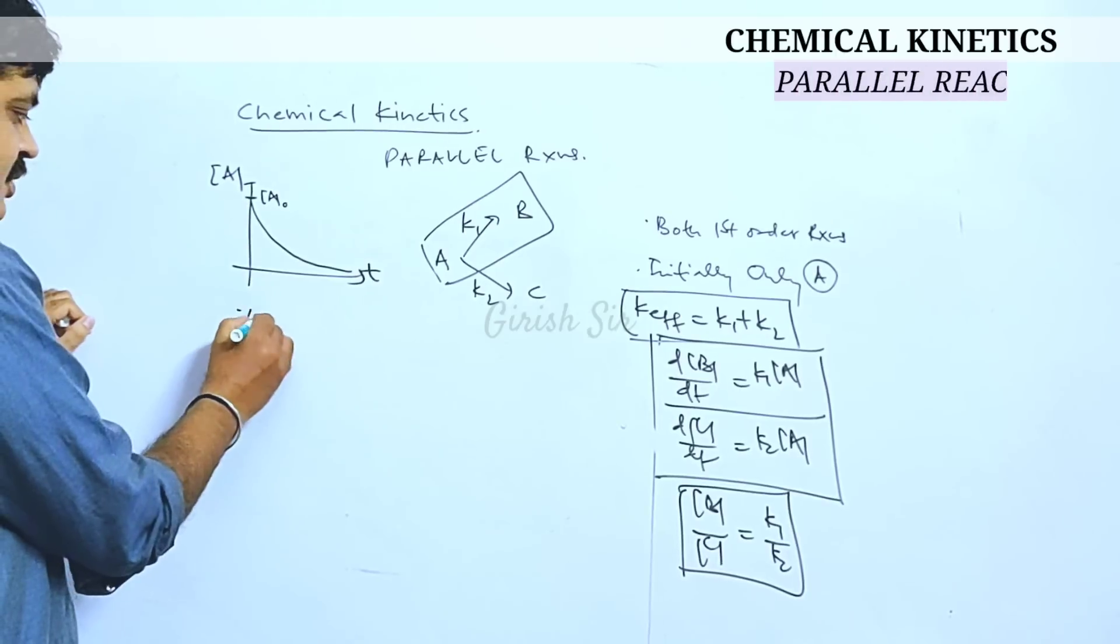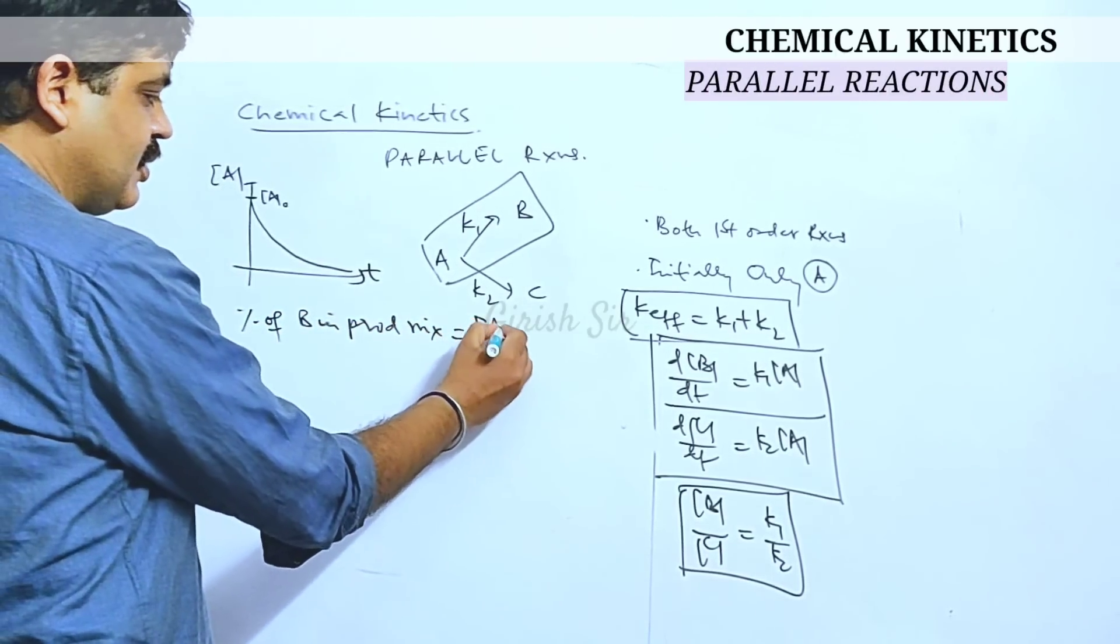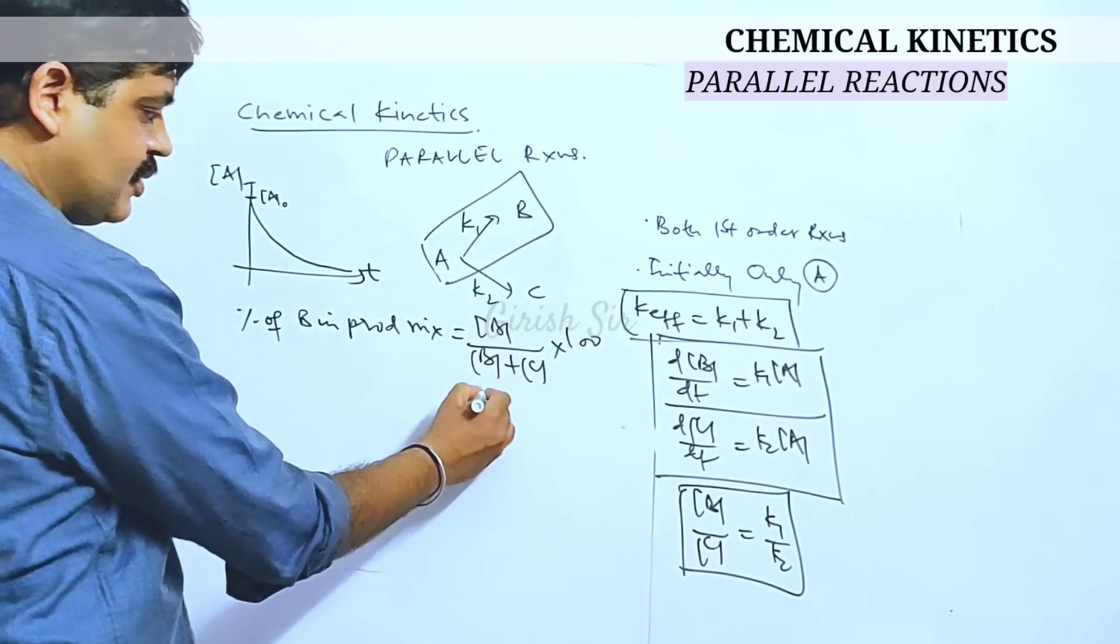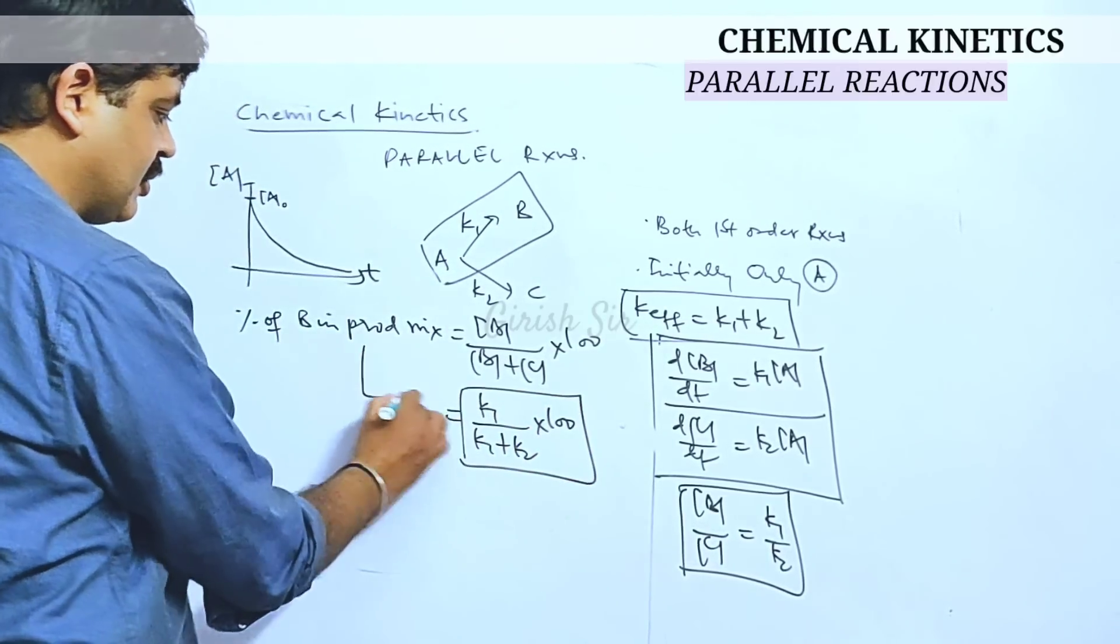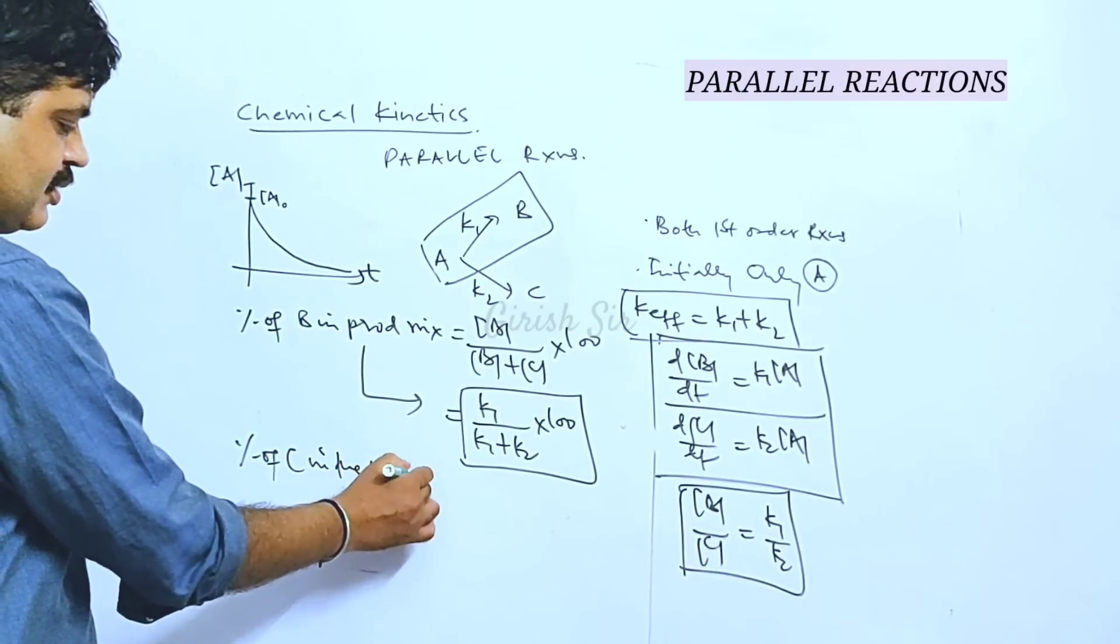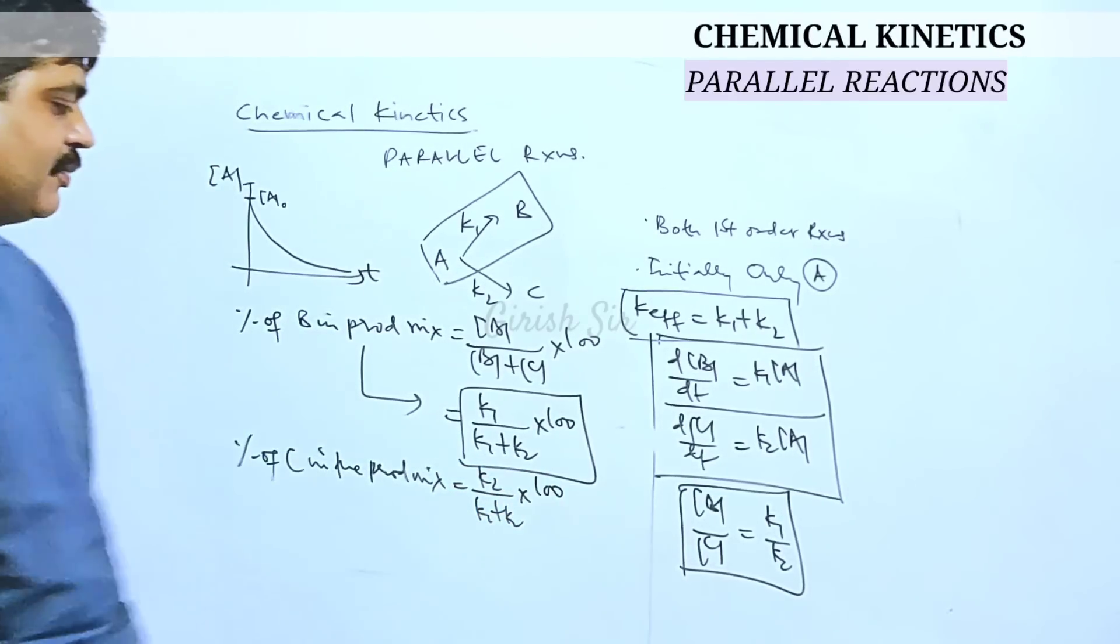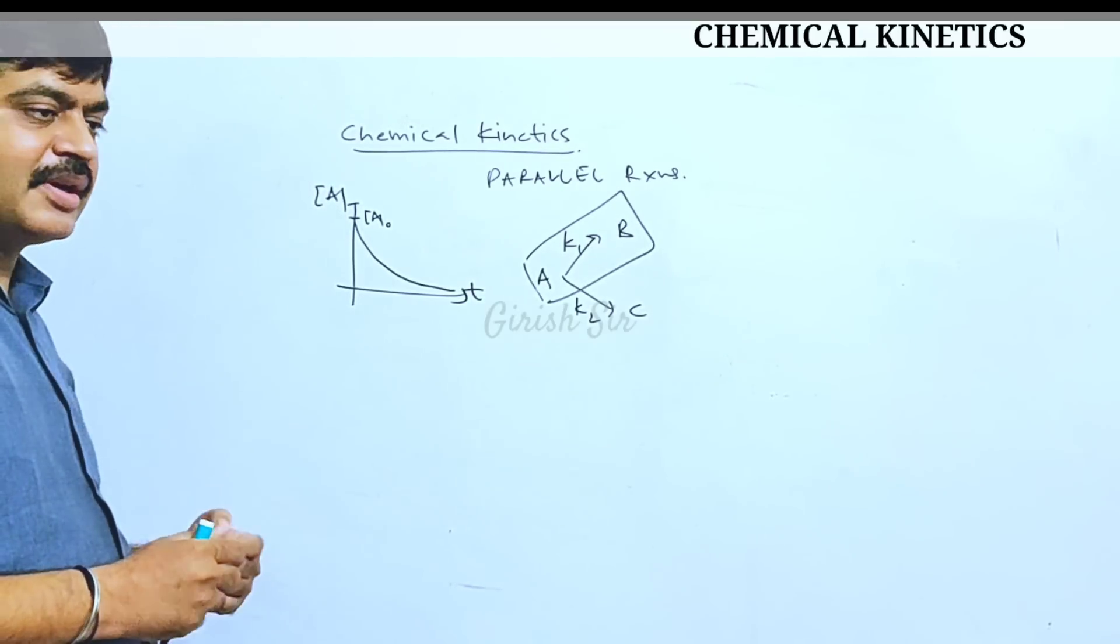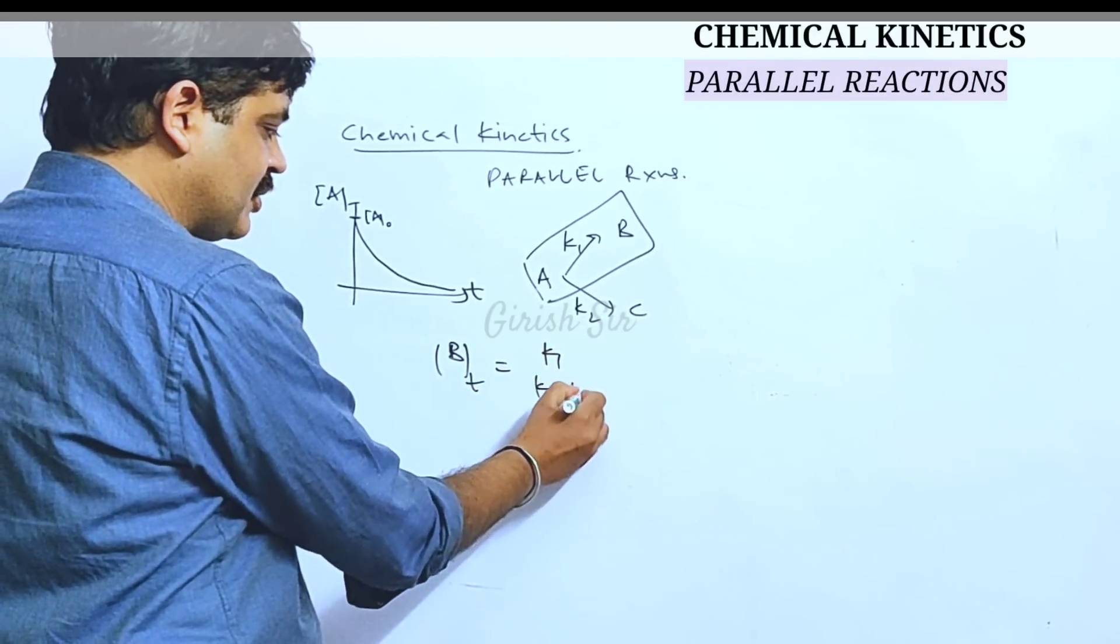Using this, we can write percentage of B in the product mixture would be, using this ratio here, it simplifies to this is percentage of B in the product mixture. And percentage of C in the product mixture similarly can be written as K2 upon K1 plus K2.